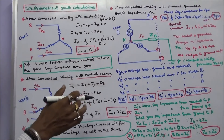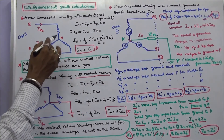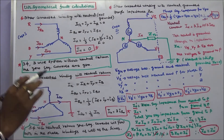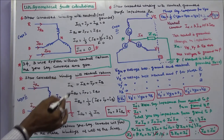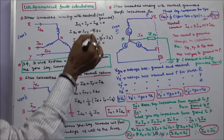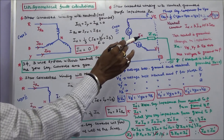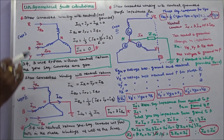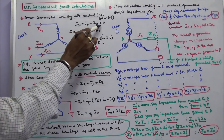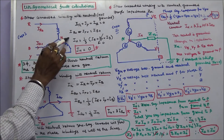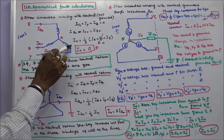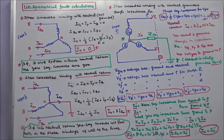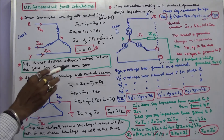Now we will discuss three cases. Case 1: star-connected winding with neutral not grounded. Here IR plus IY plus IB is equal to zero. The zero-sequence current IR0 equals IY0 equals IB0. Neutral current IN is equal to one-third times (IR plus IY plus IB). Since IR plus IY plus IB equals zero, the neutral current is equal to zero. In a three-phase three-wire system without a neutral wire, the zero-sequence currents are zero.